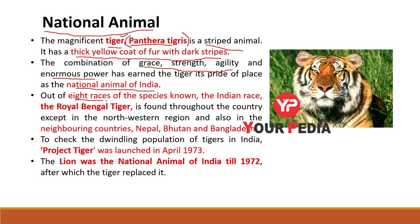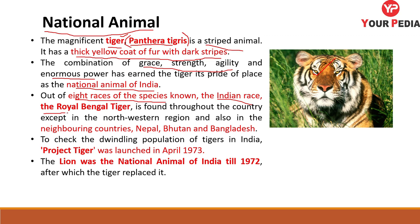Out of the eight races of this species, the Indian race is the Royal Bengal Tiger. It is found throughout our country except in the northwestern region, and is also found in neighboring countries like Nepal, Bhutan and Bangladesh. For checking the dwindling population of tigers in India, Project Tiger was launched in April 1973 by the Government of India.